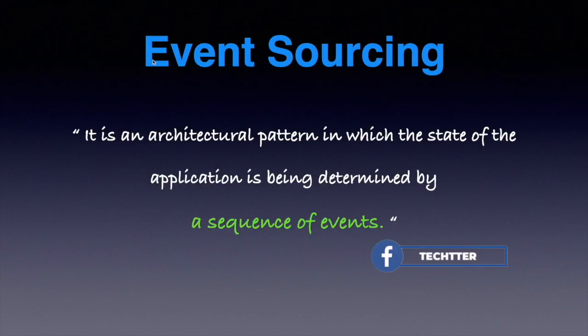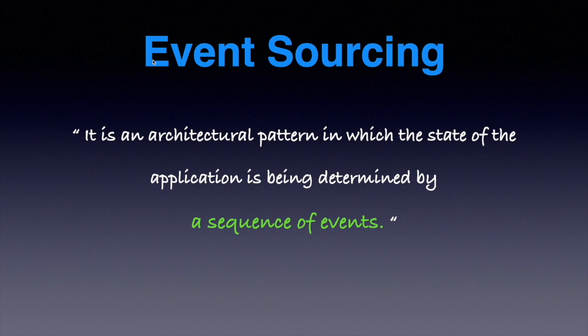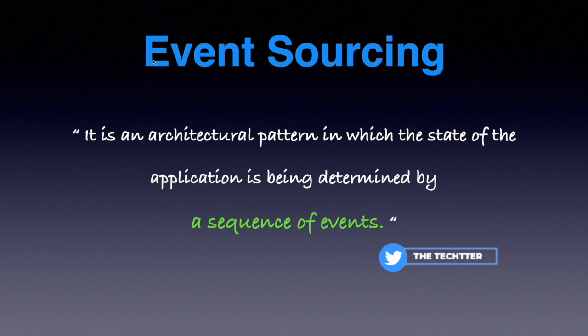Event sourcing is an architectural pattern that represents the state of the application as a series of events. In this pattern, we don't just have a state store as a relational database — the state is computed by a sequence of certain events. Event sourcing is not a new architectural pattern; it has been around a long time. For example, if you order from McDonald's, the life cycle from a business domain perspective involves events: order created, order paid, order prepared, and order delivered — it's a series of events.